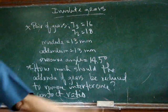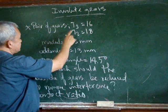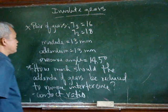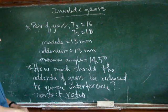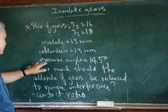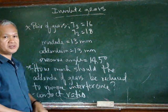So let's take a look at this problem. A pair of gears, one has 16 teeth, another has 18 teeth. The module is 13 mm. The addendum is 13 mm. The pressure angle is 14.5 degrees.